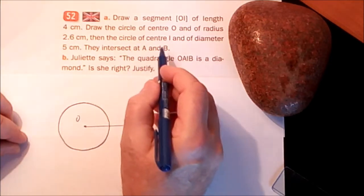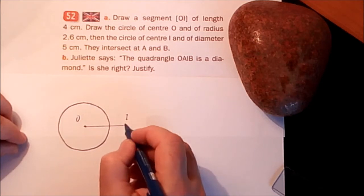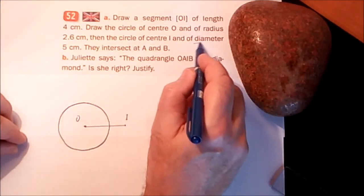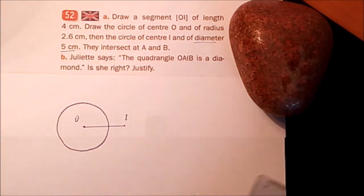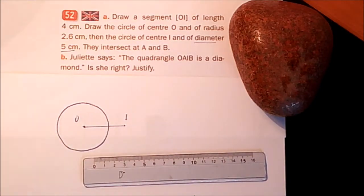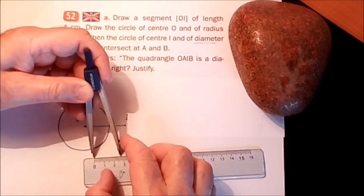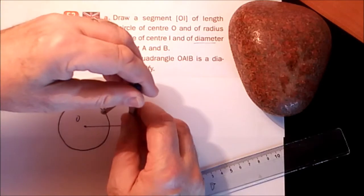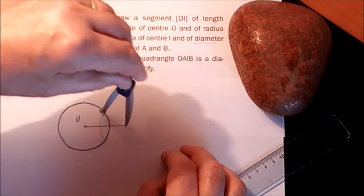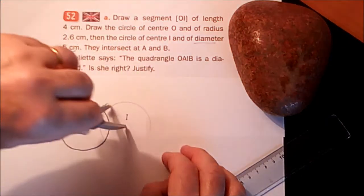Then the circle of center I and of diameter 5 cm. Si le diamètre est de 5 cm, le rayon sait combien? Eh bien sûr, le rayon, tout le monde sait que c'est la moitié du diamètre: 2.5. Centre I, je trace le cercle de rayon 2.5.